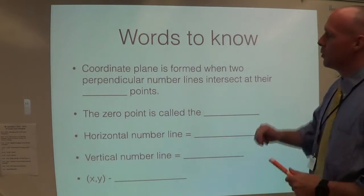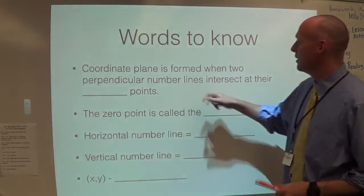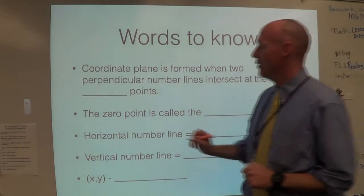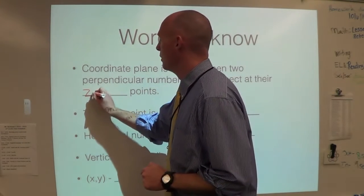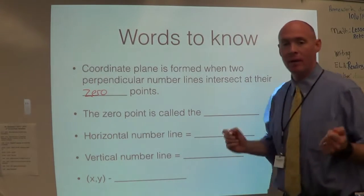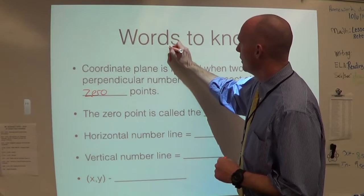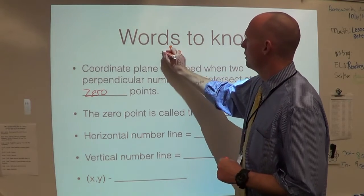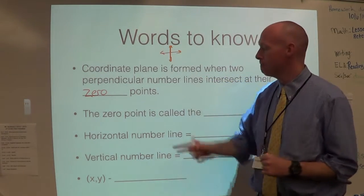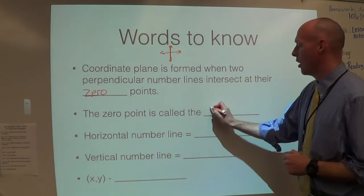Coordinate plane is formed when two perpendicular number lines intersect at their zero points. Coordinate plane is something you've probably worked with before. It is the x and y graph. The zero point is called the origin.